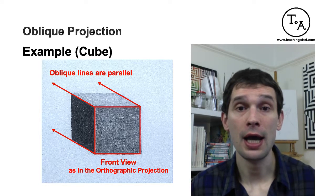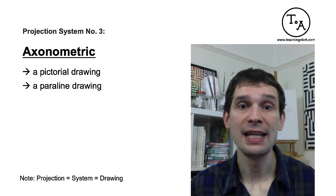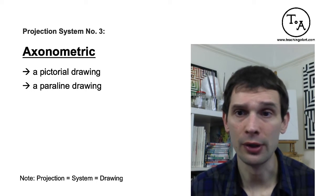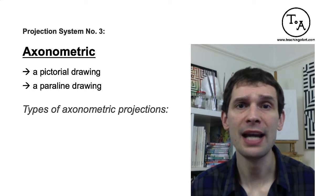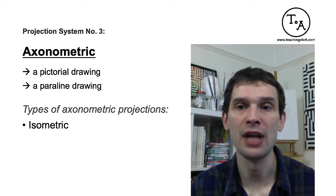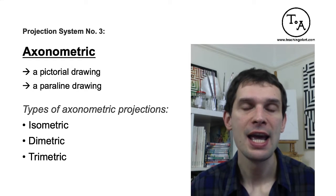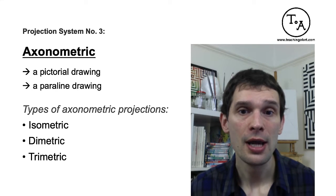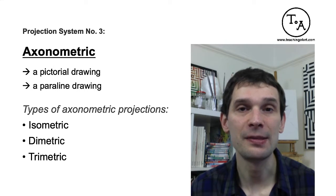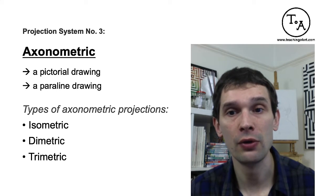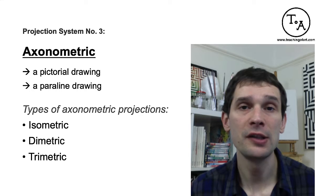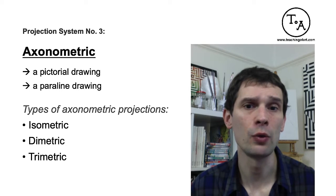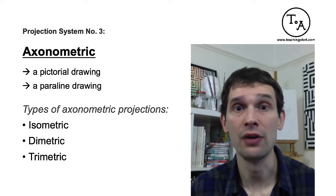Moving on to projection system number three: axonometric projection. Axonometric projection can be considered both a pictorial drawing and a parallel drawing. There are three main types of axonometric projections: isometric, dimetric, and trimetric. Sometimes people refer to this whole group as isometric rather than axonometric projection, but isometric is actually a specific subcategory of axonometric projection with very specific characteristics in relation to the projected angles. That is basically what differentiates these types — it's the characteristics around the angles.